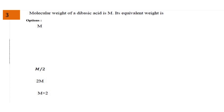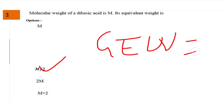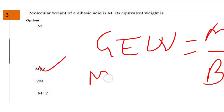Next question: molecular weight of a dibasic acid is M, and its equivalent weight is? The options were M, M/2, 2M, and M+2. The answer is M/2, because gram equivalent weight equals molecular weight divided by basicity. Molecular weight is M, and basicity of a dibasic acid is 2, so the answer is M/2.